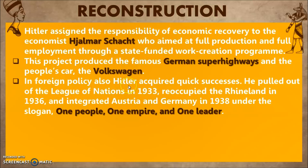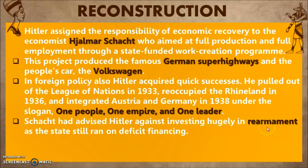In foreign policy also, Hitler acquired quick successes. He pulled out of the League of Nations in 1933, and reoccupied the Rhineland in 1936. He spoke to people about ending the injustice of the Treaty of Versailles. He then integrated Austria and Germany in 1938 under the slogan 'One People, One Empire, One Leader' — representing a racist nationalism of one race, one German empire, and one leader — Hitler.